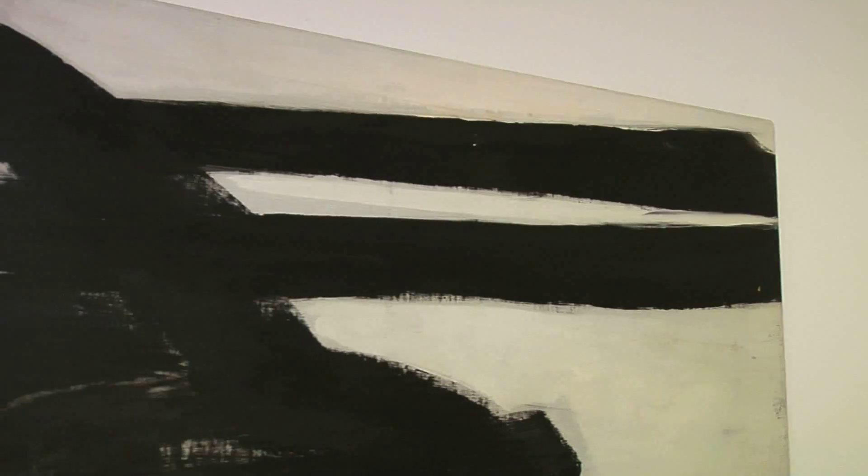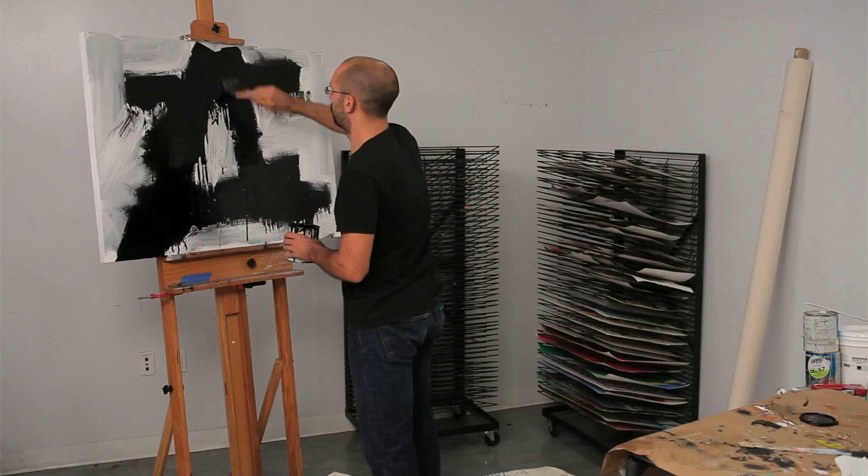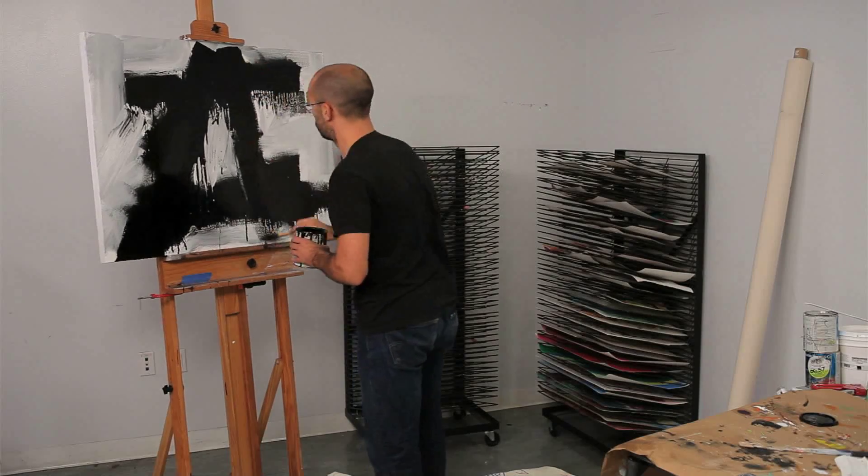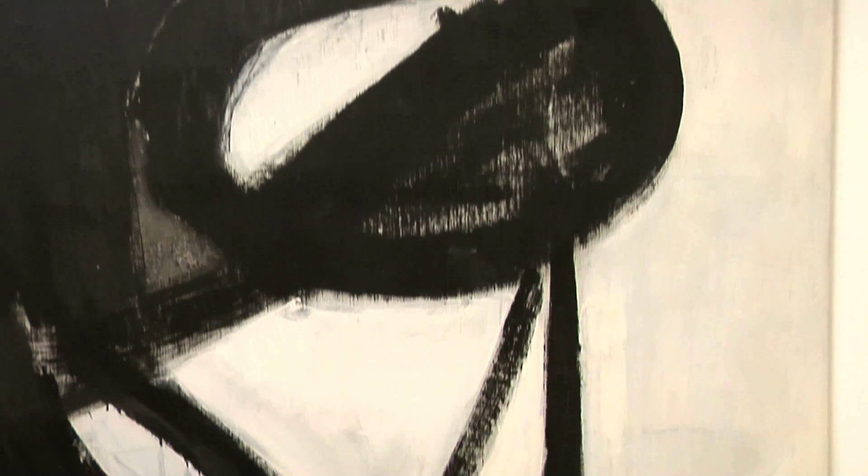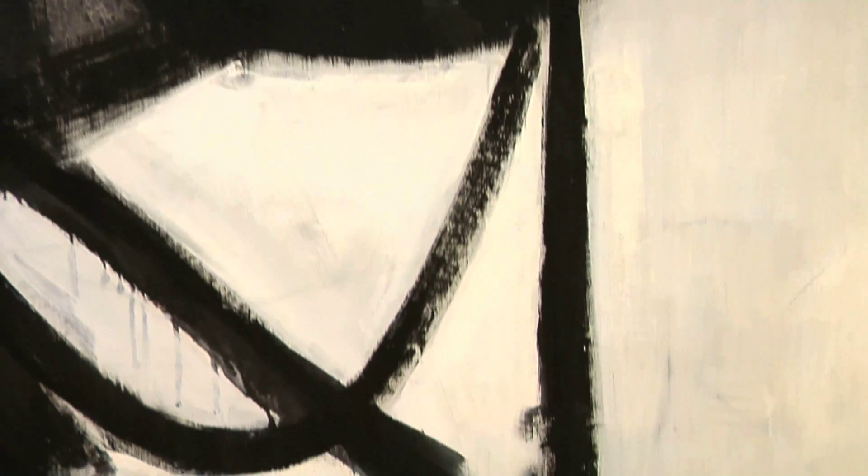Paintings like this are often referred to as action paintings, because we can almost imagine the painter as a kind of dancer, whose movements in front of the canvas are recorded in time and space.